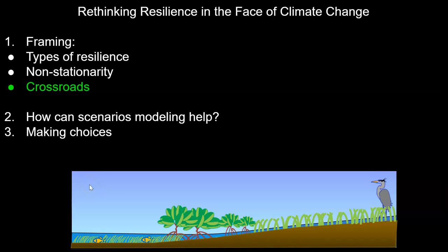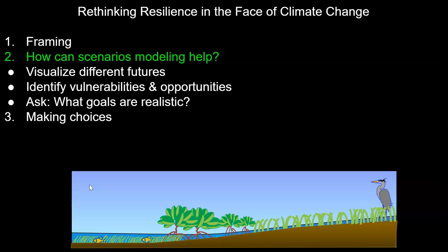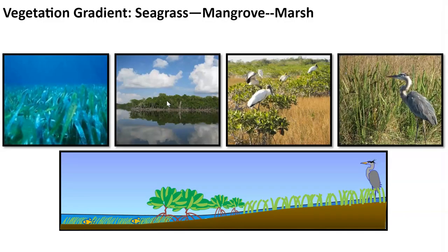So as we take stock of our current position, scenarios modeling can help us visualize different future outcomes, identify vulnerabilities and opportunities, and ask what goals are realistic. For example, one of the most important structures in the Everglades is the vegetation gradient from seagrass in the bay to mangrove forest to freshwater marsh.